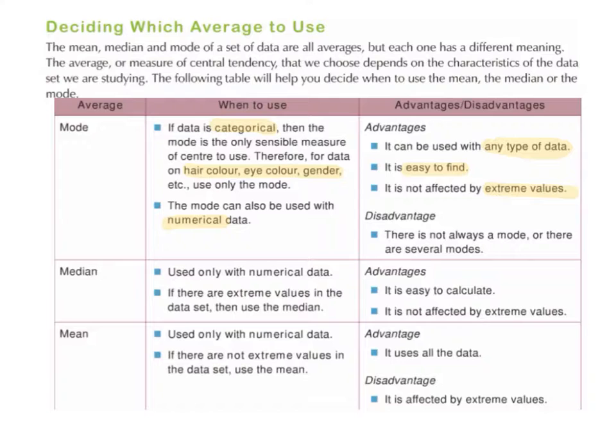So extreme values are also called outliers. An outlier is a value that's either way higher than the rest of the data or way lower than the rest of the data.